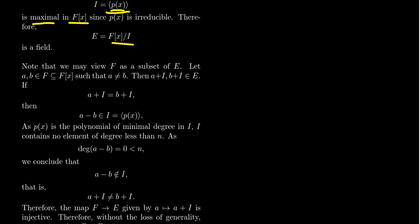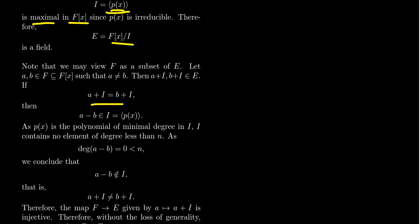The answer is yes. In a very natural way, we can view — up to isomorphism — F as a subfield of E. So up to relabeling, F is a subset of E. To see this, take two elements A and B in field F. These can be viewed as constant polynomials in F[x]. Suppose A and B are different elements. Consider the cosets A+I and B+I, which are elements of the field E. If it were true that A+I equals B+I, two cosets are the same only if A minus B is an element of I.